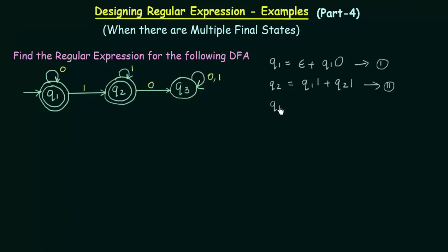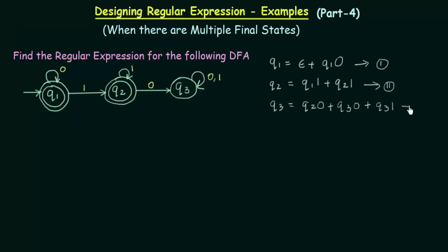Now let us do the same for q3. For q3 we see that there are incoming transitions from q2 as well as q3. From q2 it is coming with input 0, so q2·0, plus q3 is coming with input 0 and 1, so q3·0 plus q3·1. That is all for q3. Let this be equation number 3.